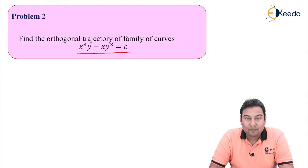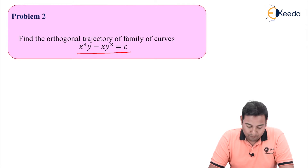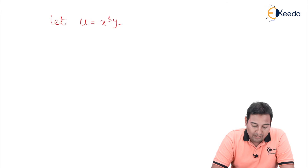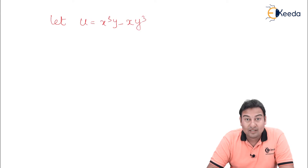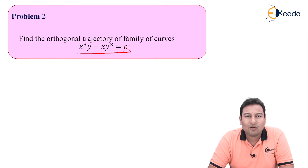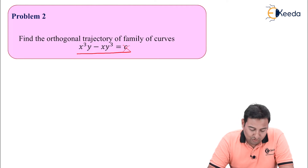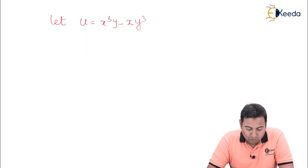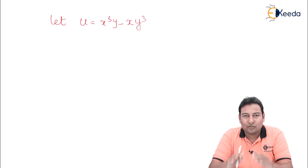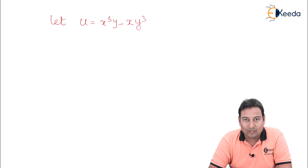So as we know the procedure, we always assume the given problem as u. So let us assume u is equal to x cube y minus x y cube. As discussed, we don't take this constant, so we leave c aside — instead of c we can have 2, 3, 4, whatever constant we are going to avoid it. Once you assume the problem as u, you are going to follow the flowchart.